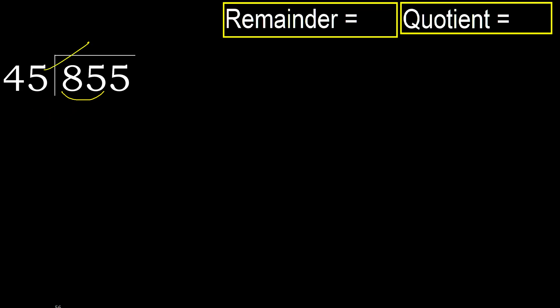45 multiplied by which number is nearest to 85 but not greater? 45 multiplied by 2 is 90, which is greater. 45 multiplied by 1 is 45, which is not greater. OK, subtract: 85 minus 45 equals 40.